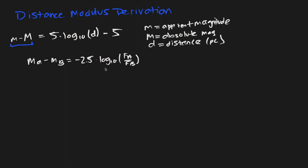This equation states that if two stars a and b have fluxes f_a and f_b, their magnitudes are related by this equation. But we need absolute magnitude in this equation. Since the distance modulus only has one star, we can say that m_b is the magnitude at 10 parsecs away — that's basically the absolute magnitude.